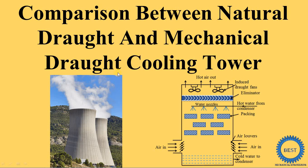The first difference you can understand from this diagram is the size and shape. This image is for the natural draft cooling tower and this image is for the mechanical draft cooling tower. The shape of the natural draft cooling tower is hyperbolic, and the shape of the mechanical draft cooling tower is a rectangular box type.